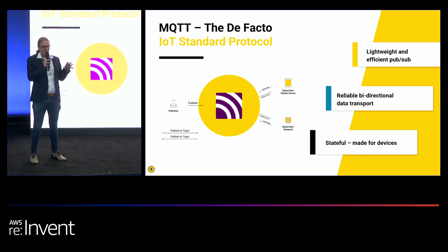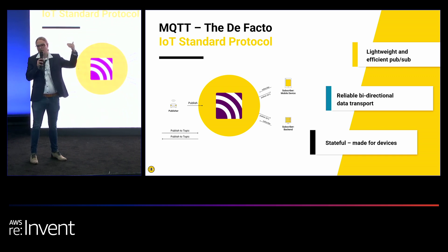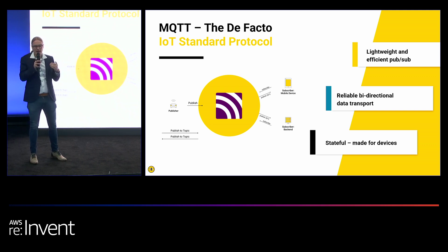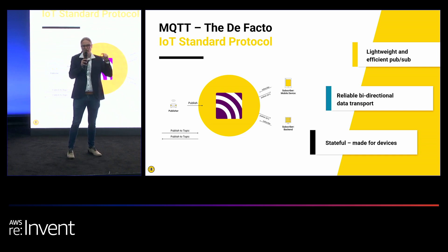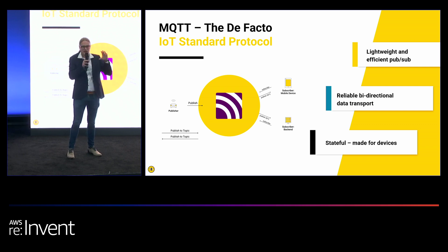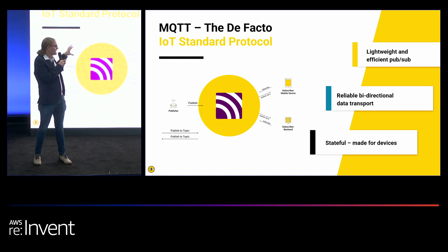MQTT is reliable and bi-directional. You can connect devices over standard internet — it requires TCP/IP — and similar to your smartphones, it keeps an open TCP connection all the time, which allows for push communication down to a device. It's super efficient and super small. As a fun fact, it was originally built for monitoring oil pipelines, where you really want to save every bit and byte.